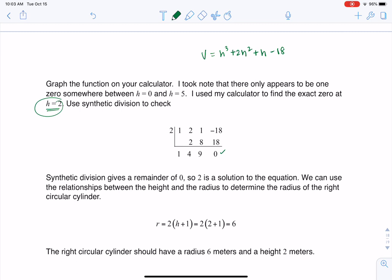So I know the height of my cylinder is 2, and technically it would be 2 meters, right? So height is 2 meters. And now all I have to do is find that radius.